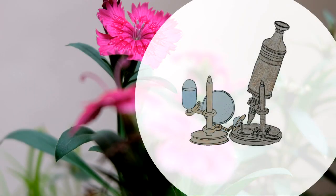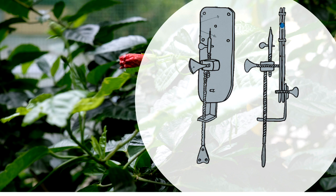In 1665, Robert Hooke, an English scientist, examined a thin slice of dry cork under a self-designed crude microscope and saw layers upon layers of boxes or cells — like rooms. Thus, the word cell or compartment was born. Later, in 1676, Anton von Leeuwenhoek, a Dutch draper who had a hobby of making lenses, observed many living unicellular organisms. He called them animacules — they were animated and living.